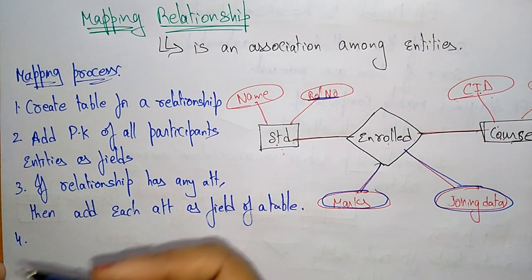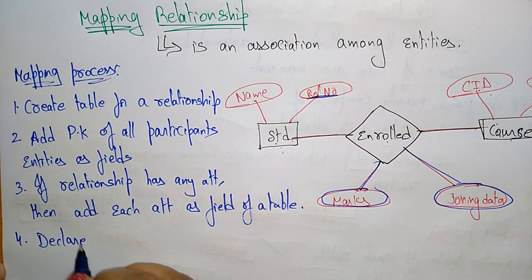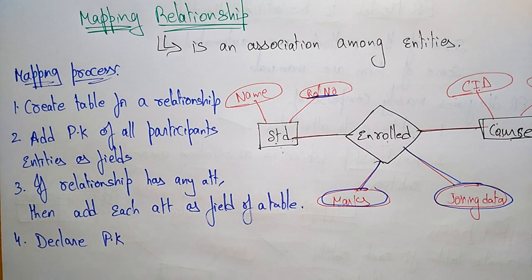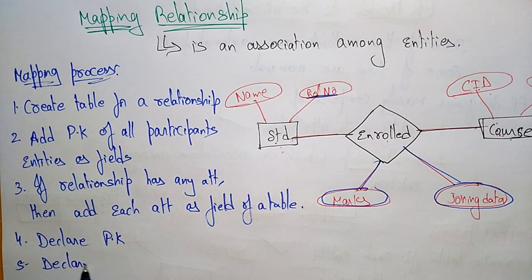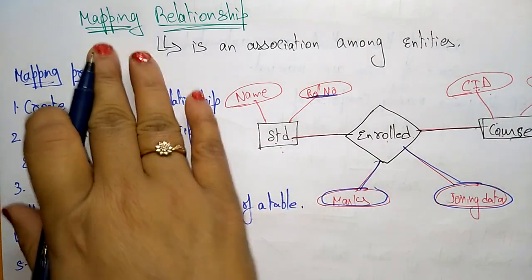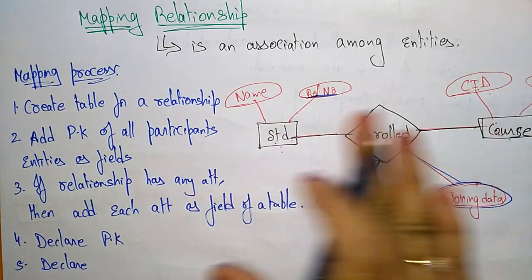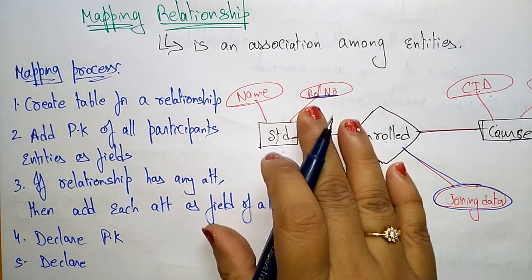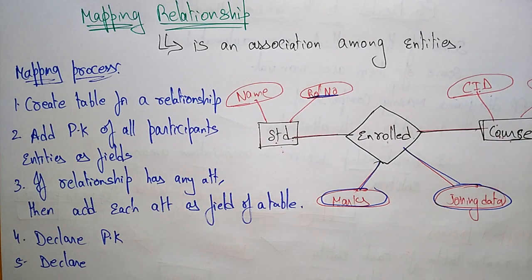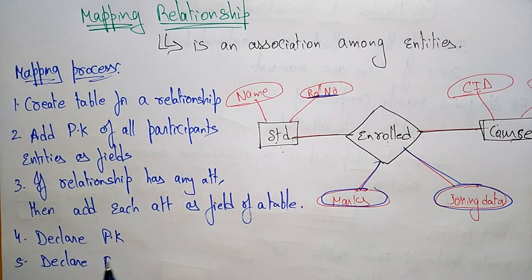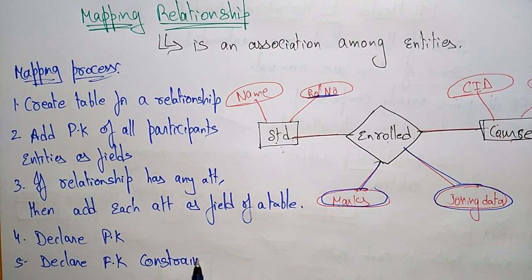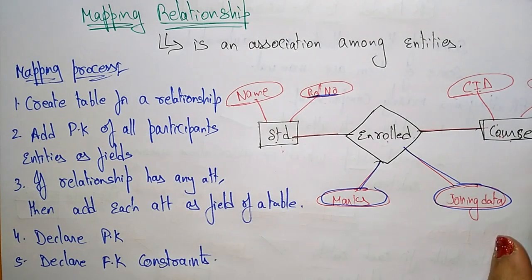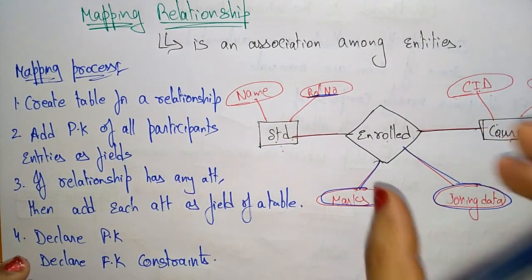Fourth point: you have to declare a primary key composing of all the primary keys of the participating entities. Also, you have to declare a foreign key, because here one entity depends upon the other. If one attribute is acting as a primary key in one entity and you are accessing it in another entity, then it becomes a foreign key. So, if that is the case, just declare the foreign key constraint. These are the steps you have to follow while creating a mapping relationship.